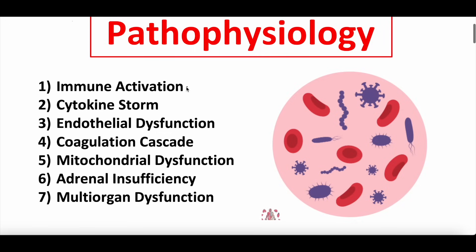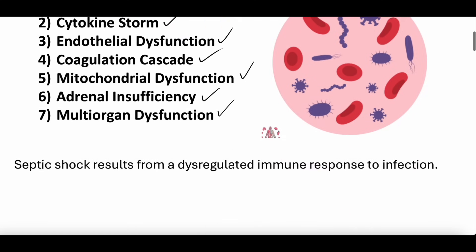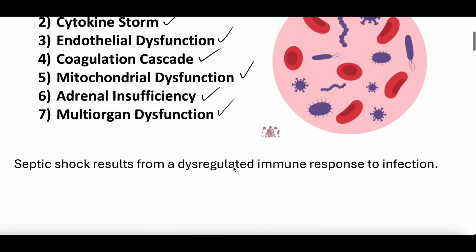We're going to start with immune activation, then dive into the cytokine storm, talk about endothelial dysfunction, coagulation cascade, mitochondrial dysfunction, adrenal insufficiency, and multi-organ dysfunction. So kind of a jam-packed agenda — we're going to tickle the surface of each one.